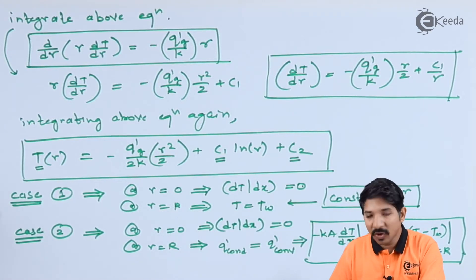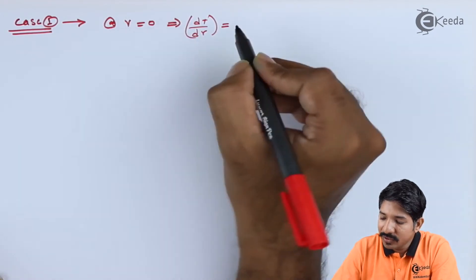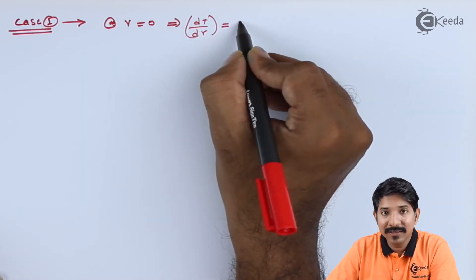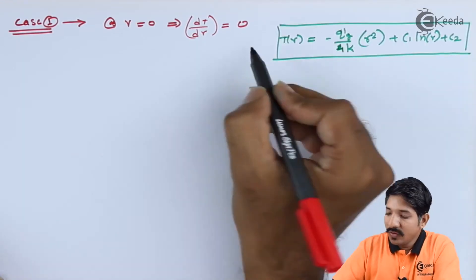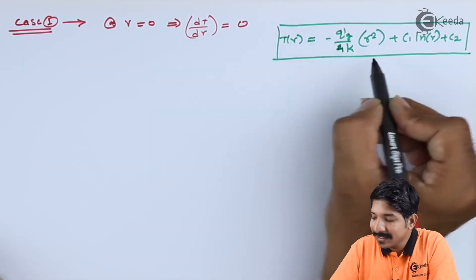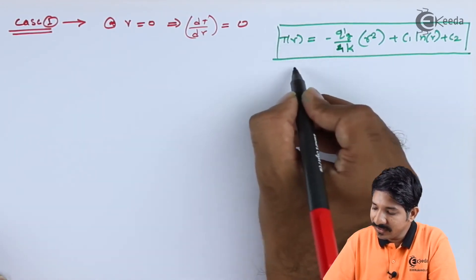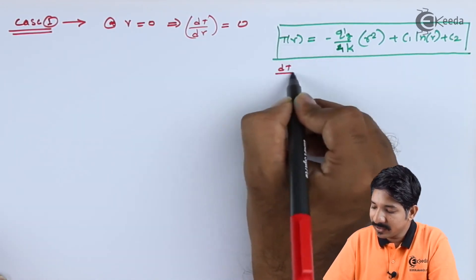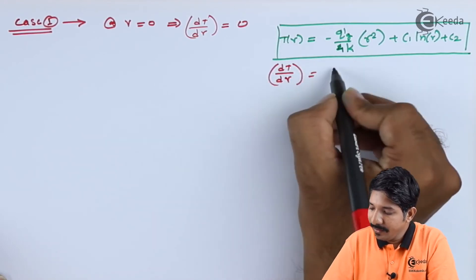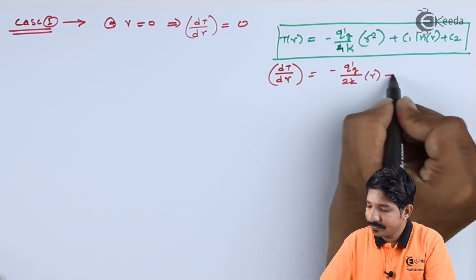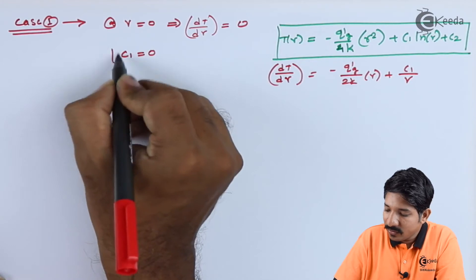Let us start solving these two cases one by one. For the first case, at r = 0, dT/dr = 0. Differentiating the temperature profile and substituting this boundary condition, all terms become zero except C₁, so C₁ = 0.